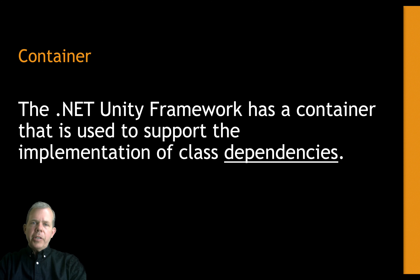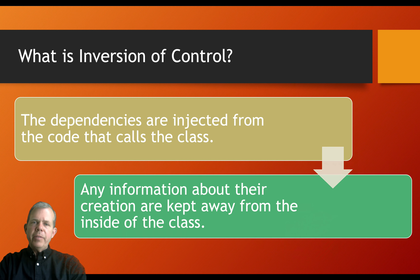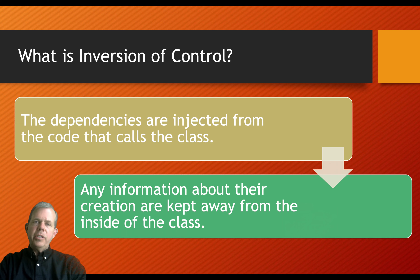A key part of dependency injection is the idea of a container. A container is really a class or a list — a list of things you want to make sure are registered and can be inserted into other classes. Inversion of control is a programming technique, not a product. It means that one class that is a parameter of another is injected into the code that calls that class. Injected really just means passed in by some kind of reference, and any information about their creation is kept away from inside the class.